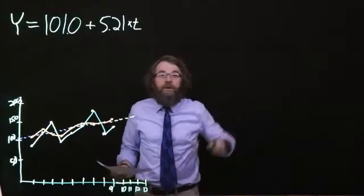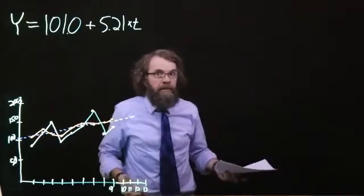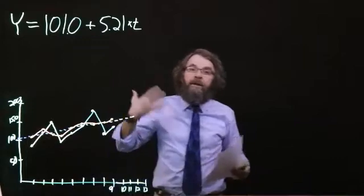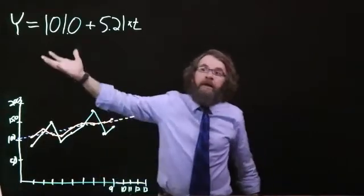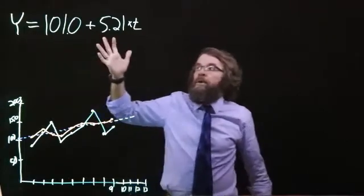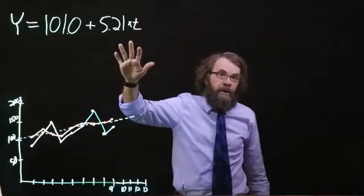In the last video we took the de-seasonalized data that we computed in the previous step and did linear regression through the de-seasonalized data and we got this result. We have an intercept of 101.0 and a slope of 5.21.